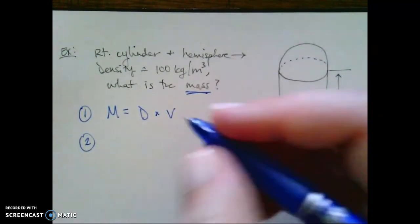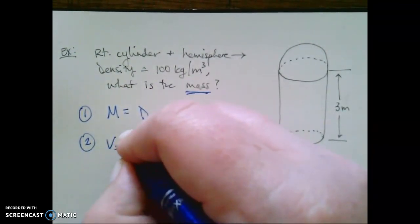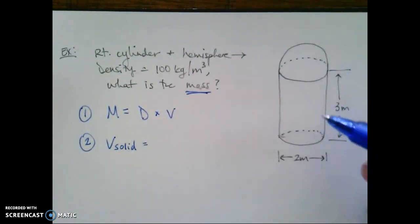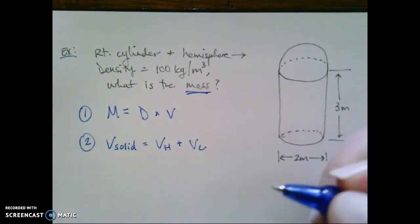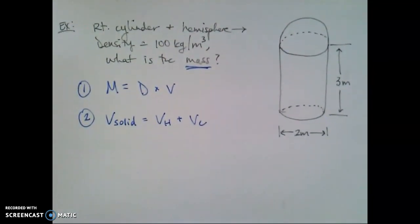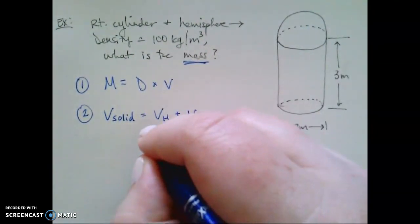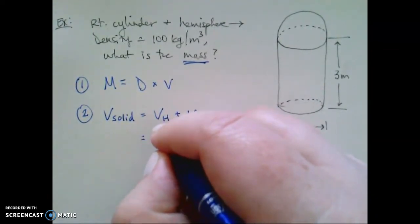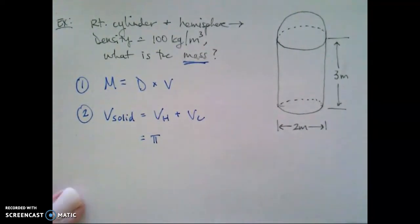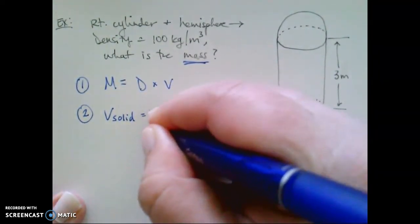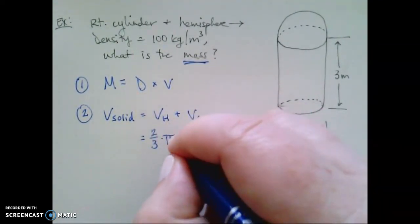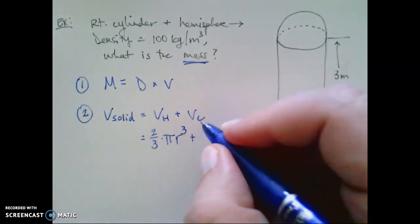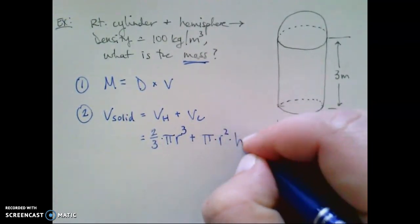Now I like this problem because it's a composition of solids. So I'm going to have to find the volume of the hemisphere and add that to the volume of the cylinder. So I'm going to have to pull out some of those formulas. So the volume of a hemisphere is two-thirds times pi r cubed. And the volume of the cylinder is pi r squared times h.